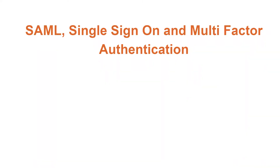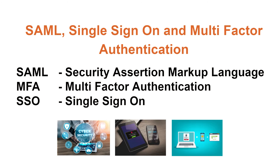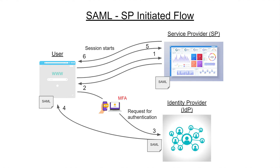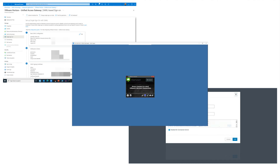This concludes today's session, where we talked about user security with SAML, MFA, and SSO. At a high level, we discovered what they're about and how they could benefit you and your organization from a security, service, and support point of view. We talked about the roles of users, service providers, and identity providers, and the two different SAML authentication flows. Remember to check out part two in this series, where we demonstrate SAML, MFA, and SSO working together in a real-life demo with Azure SAML, VMware Horizon, and Tenzig Zero clients. For questions, please contact your Tenzig team or visit www.tenzig.com. Thank you very much, and have a great day.